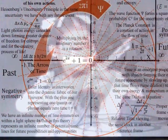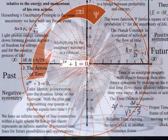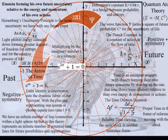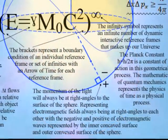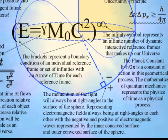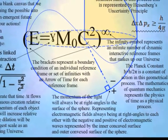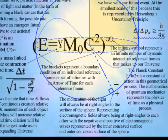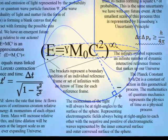We have an infinite number of line symmetries within a sphere, representing an infinite number of possible timelines for future possibilities and opportunities. Within this geometrical process, the momentum of the light will always be at right angles to the surface of the sphere. And it is because of this dynamic geometry that electromagnetic fields are always at right angles to each other.